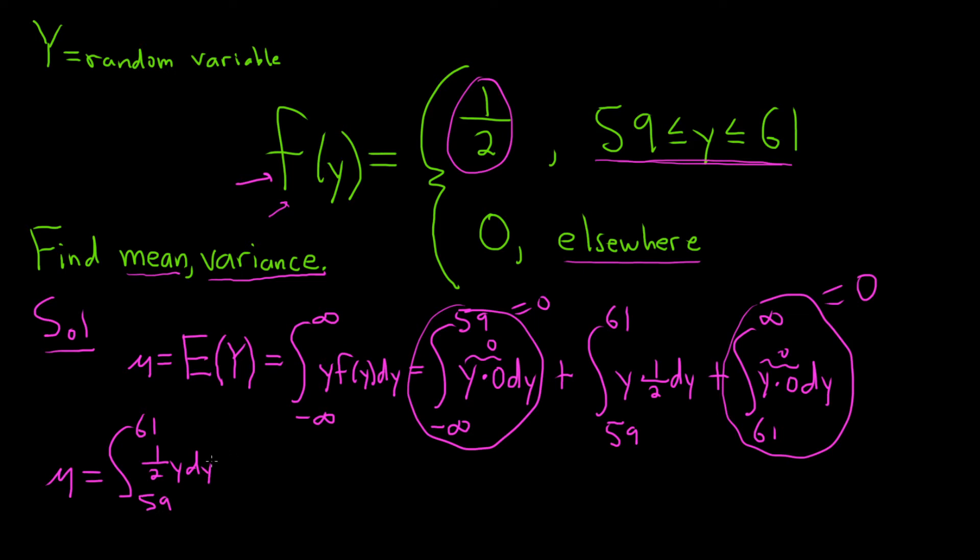Now we're ready to integrate. To integrate this, we'll simply use the power rule. We take the exponent here of 1 and we add and divide. So 1 plus 1 is 2, we get y squared over 2.